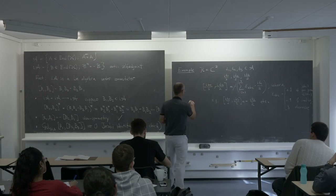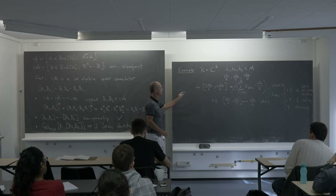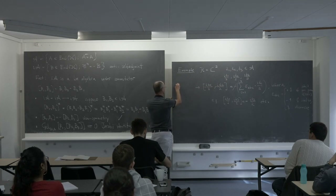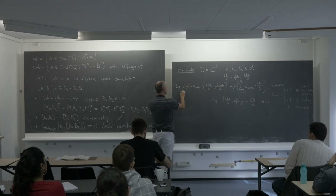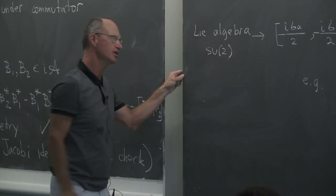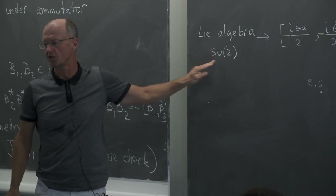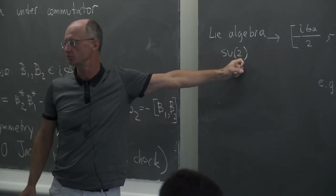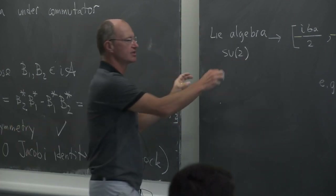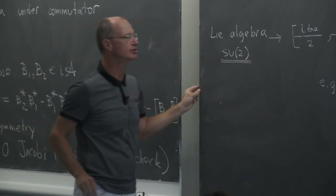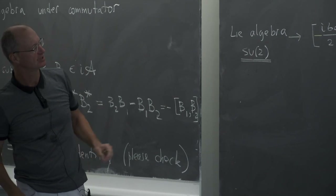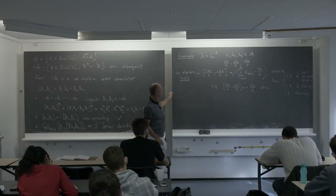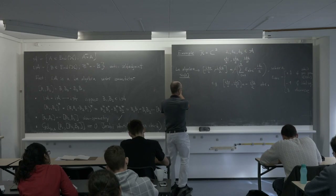This Lie algebra has a special name: su(2), or special unitary of dimension 2. At the moment it does not matter too much for us, but it is an interesting example.